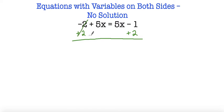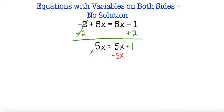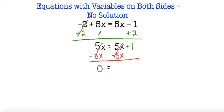So negative 2 and positive 2 cancel out because they're opposites, and now I'm left with 5x is equal to 5x. Here I have negative 1 and positive 2 — since the signs are not the same, I subtract and keep the sign of the number with the greatest absolute value. Now with all constants on the right side, I move all variables to the left. So 5x minus 5x equals 0, and negative 5x and 5x are opposites so they cancel out. That gives 0 plus 1, which is just 1.